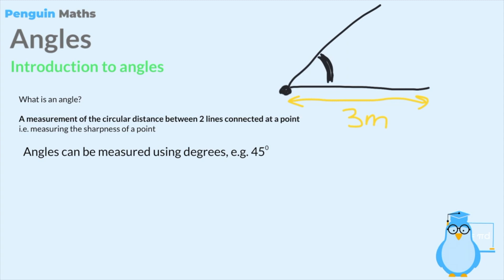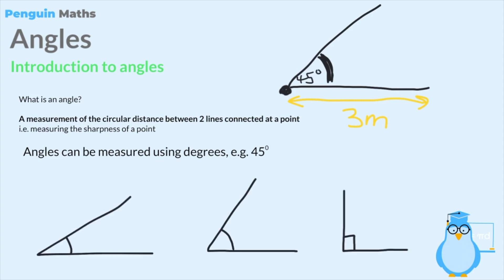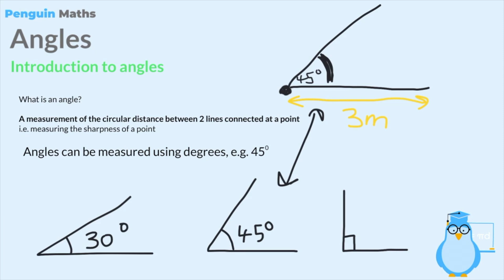In this example we can say the angle is 45 degrees. Now let's look at three examples to see different angles. Starting on the left, the space between the two lines is the smallest, so it is the smallest angle. As the space increases across the next two examples, the angle also increases. We can quantify these using degrees: the one on the left might be 30 degrees, the next one around 45 degrees, and then the last one must be bigger than 45.